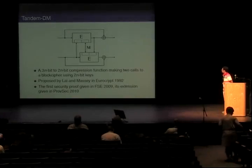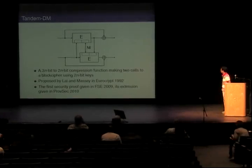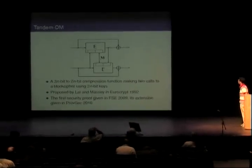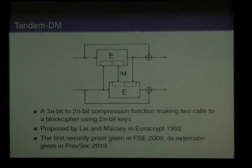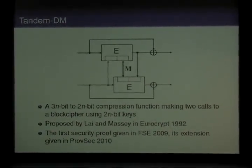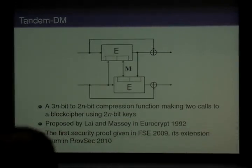And this is the TandemDM compression function. Here, each wire carries n-bit information, so this compression function compresses an n-bit message block by making two calls to the underlying block ciphers using two n-bit keys. This is a very old construction proposed by Ray and Messi in 1992 at the EuroCrypt workshop.